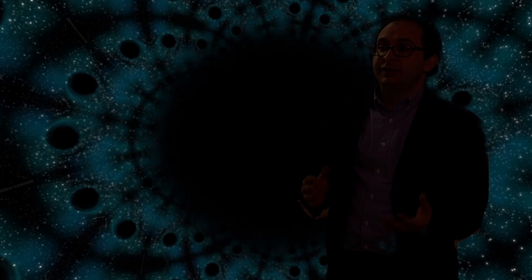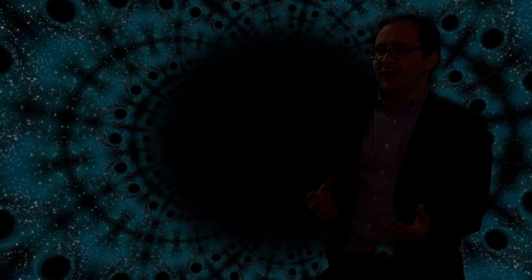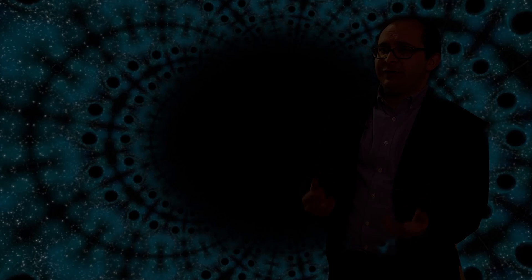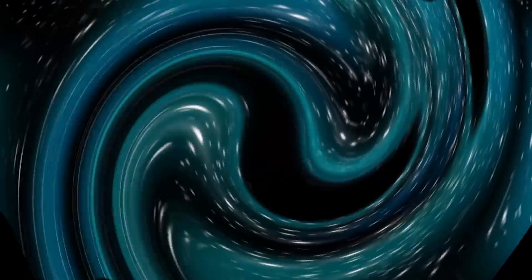Supermassive black holes, billion solar mass black holes at the centers of galaxies, are actually in many ways creative objects. So first of all they're not just black. In fact, as material falls into those black holes, that material loses a lot of energy which gets radiated away as light, as relativistic jets which we can see in radio emission.